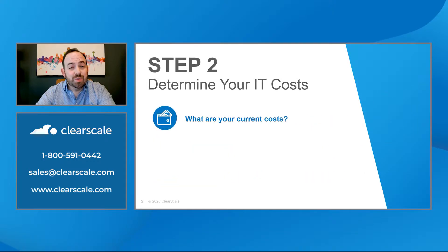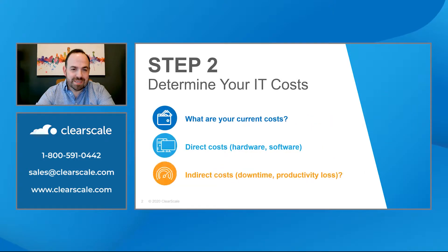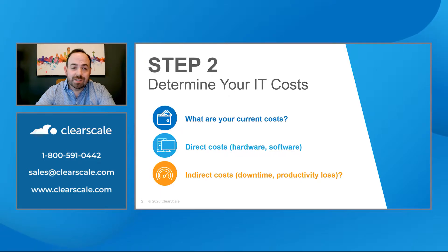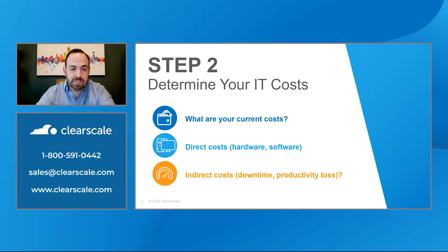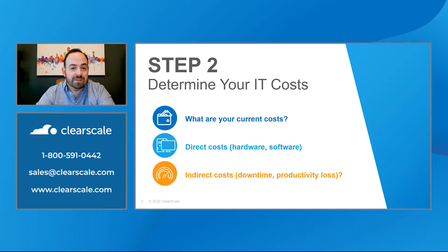Step 2: Determine your IT infrastructure costs. Calculate all direct and indirect costs associated with your IT inventory. Your direct costs will include things such as cost of hardware and software. Most of your indirect costs will be related to factors such as downtime and productivity loss.